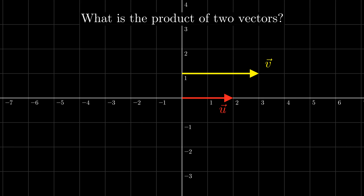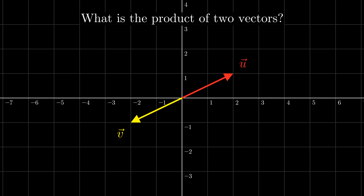So let's forget about any preconceptions we might have about multiplying vectors — the geometric product, the inner and outer products, and any other products between vectors. From this standpoint, let's ask: what is the product of two vectors? Let's start with two parallel vectors. We will define the product of two parallel vectors to be the product of their lengths. Because u has a length of 2 and v has a length of 3, the product of these two vectors is 6. If the vectors are pointing in opposite directions, let's make their product the negative of the product of their lengths. Because the length of each of these vectors is √5, the product of these two vectors is −5.